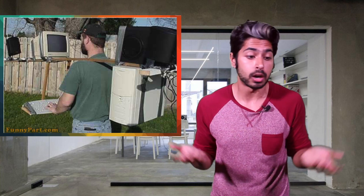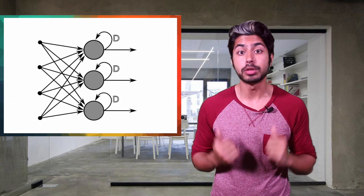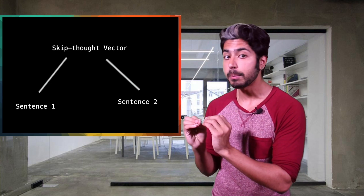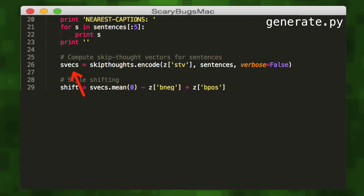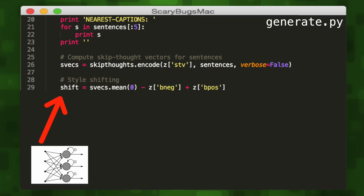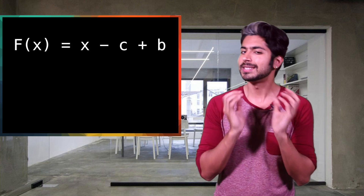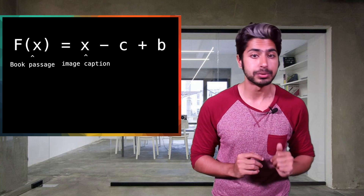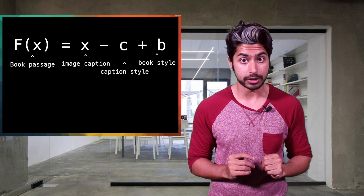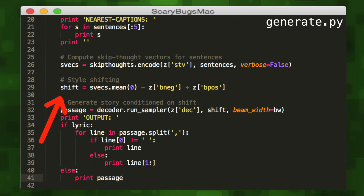We're starting to see GRUs used more and more — they're relatively new. So when we feed the sentences into the RNN, it'll create an abstraction: the vector representation, or skip thought vector. Sentences that share semantic and syntactic properties will be mapped to either the same or similar skip thought vectors. The function returns these vectors as a NumPy array, which we can then modify via the style shift. We'll take our thought vectors and modify them to match the style of stories using a pre-trained RNN. That RNN was trained on a dataset of romance novels, where each passage was mapped to a thought vector. So we're essentially computing a function like this for a style shift: F is a book passage thought vector, X is an image caption, C is a caption style vector, and B is a book style vector. We remove the caption style from the caption and replace it with the book style to create a book passage vector.